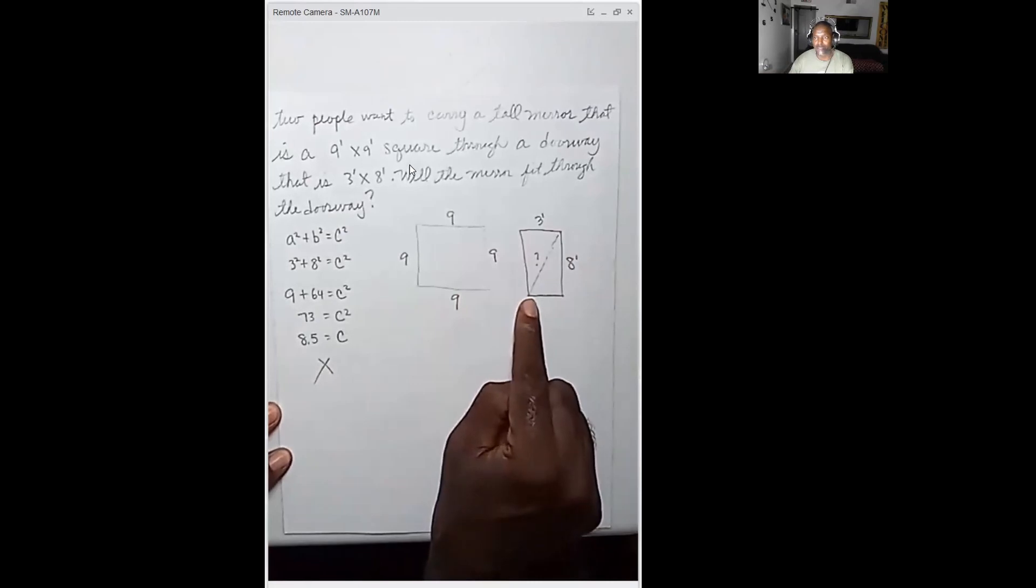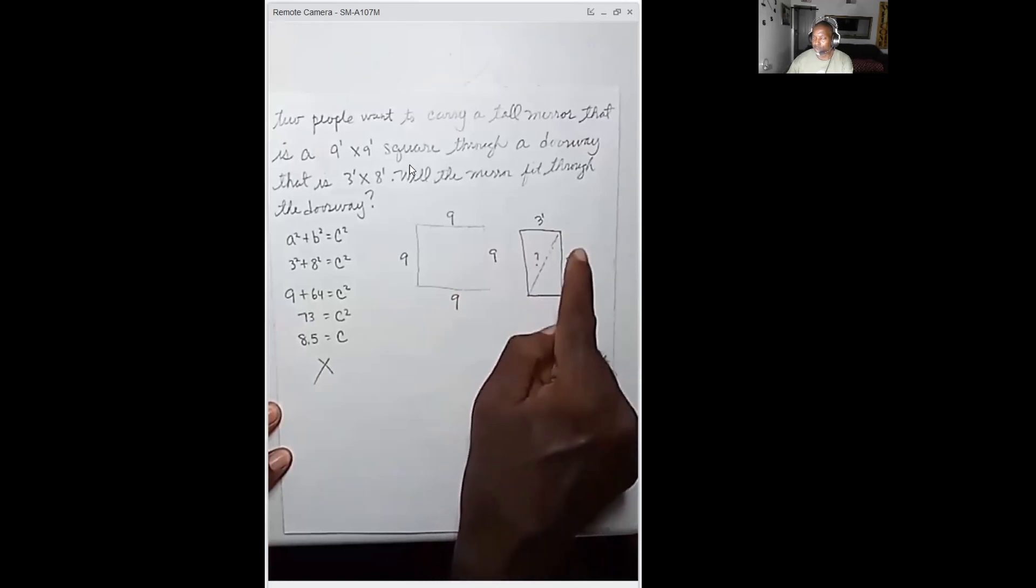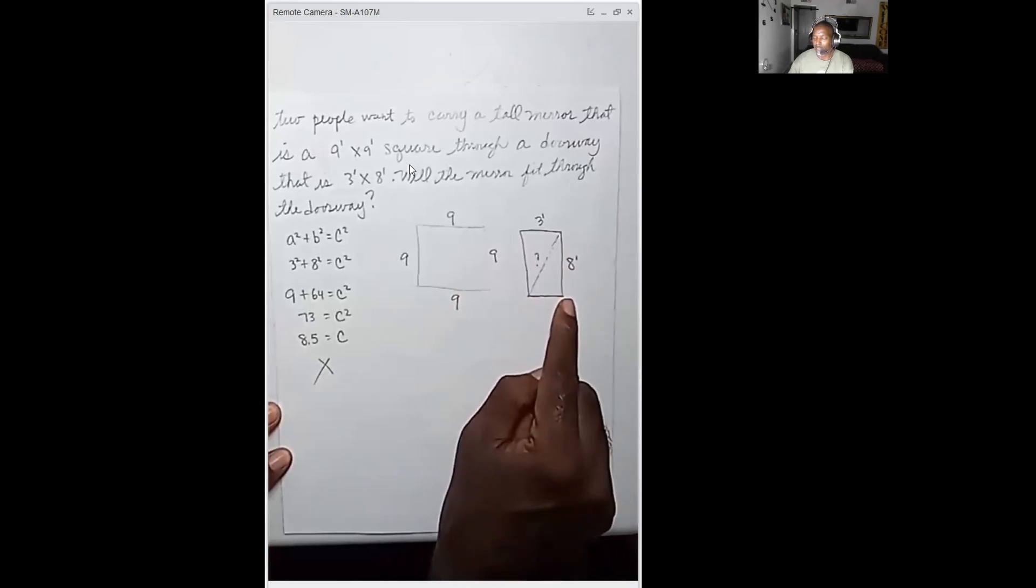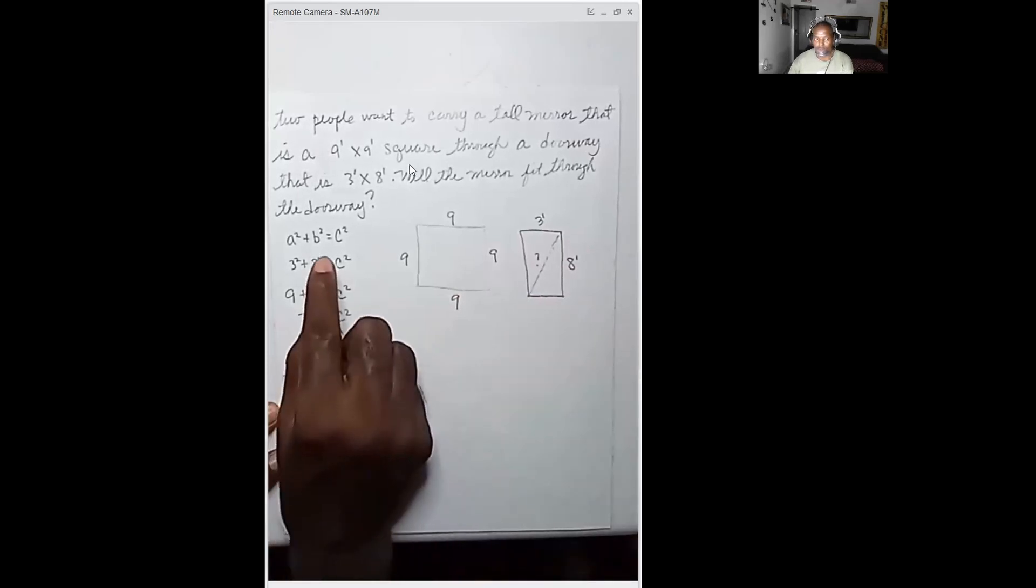The only way obviously that we're going to get this through the doorway is if we go on the diagonal. So that's what this problem is all about - it's about finding this diagonal. You see a right angle here so we can use Pythagorean theorem. Whenever you solve these problems, first thing you want to do is write your equation. You'll memorize it by the time the test comes.